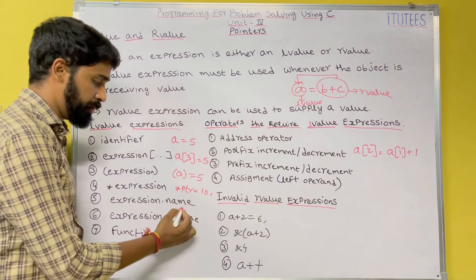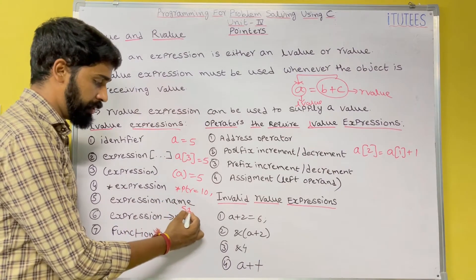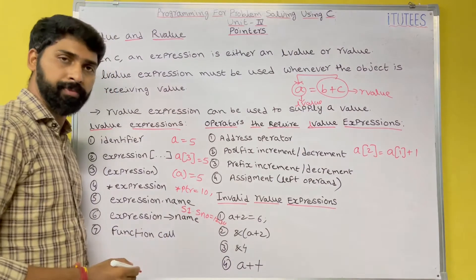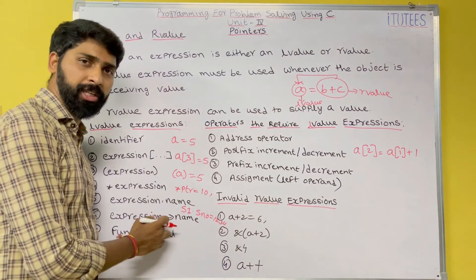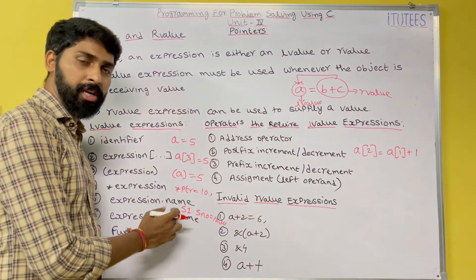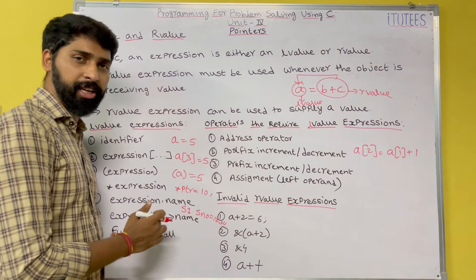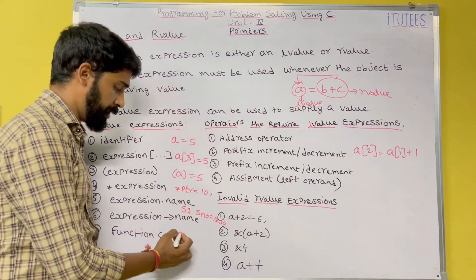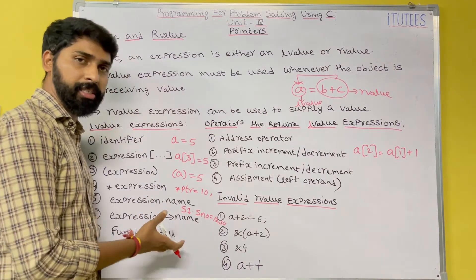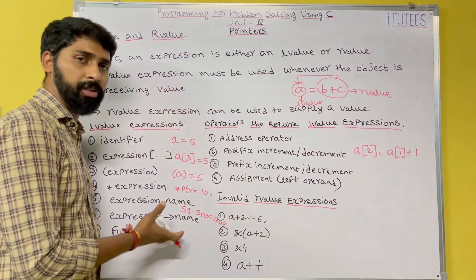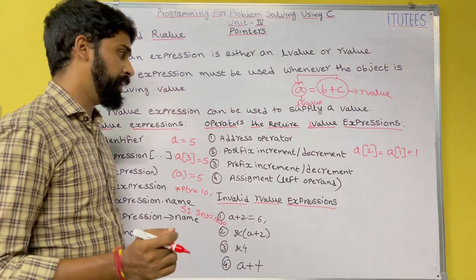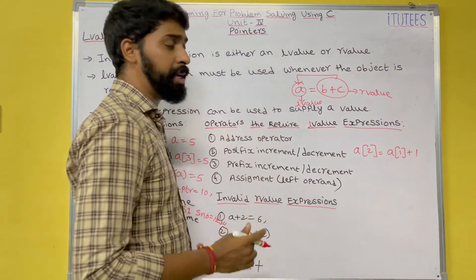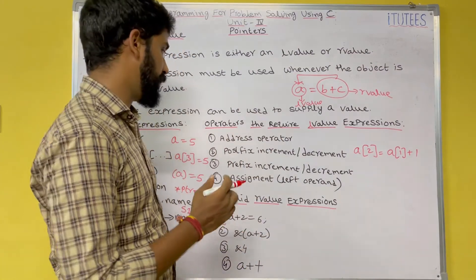Next, 'expression.name' — when using structures we access members with the dot operator. For example, 's1.s_number = 1234'. Then 'expression->name' is structure indirect selection. Finally, a function call can also be an l-value expression, which we will discuss in future classes.